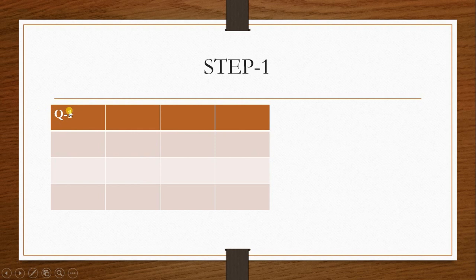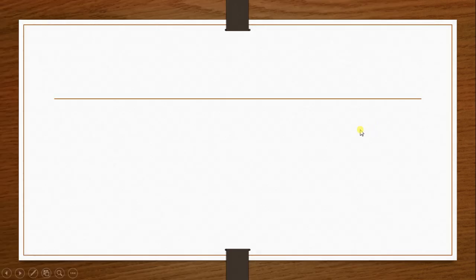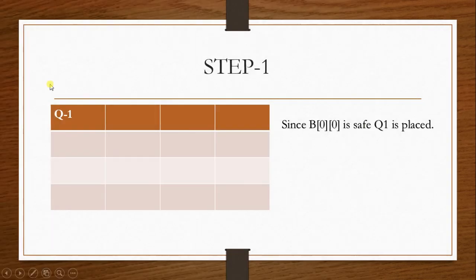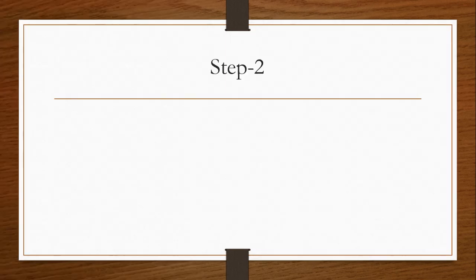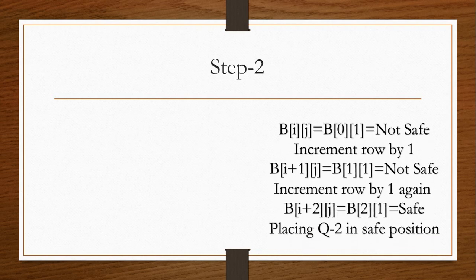Step 1: Queen number 1 is placed at location B[0][0]. This is because it is the first queen to be placed on the board where no other queen is placed, so it is always a safe position. Queen number 1 is placed directly at the starting position without any checks.